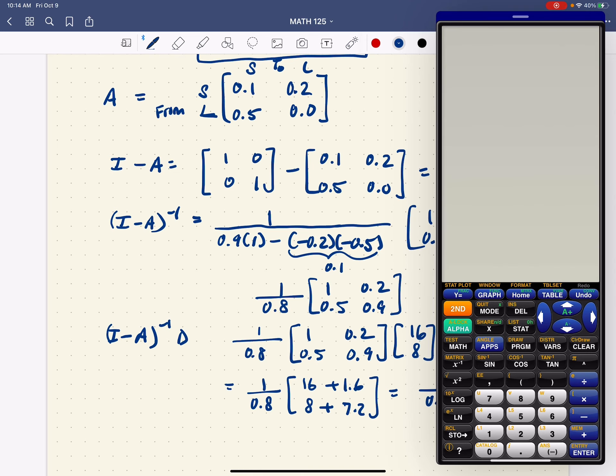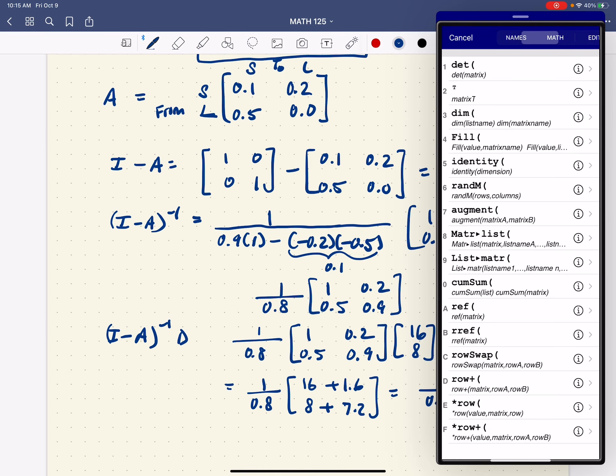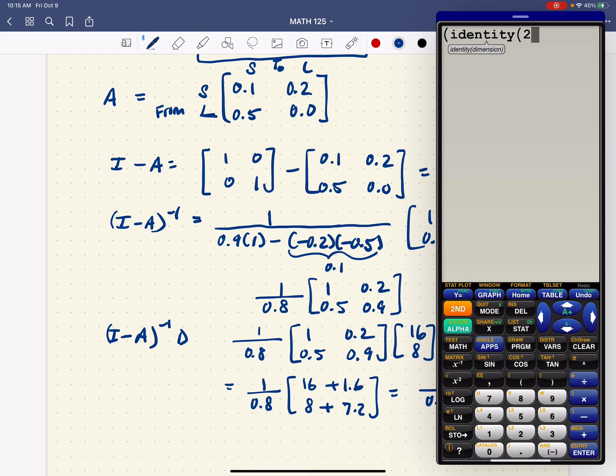And now we're just a couple keystrokes away from getting the answer. So second and quit. I'm going to use a parenthesis because I'm taking the inverse of a complicated expression. I'm going to go to the matrix menu and math. And notice that number 5 here is identity. And I want the two-dimensional identity. So I'm going to put 2 in parentheses there. And then I'm going to subtract matrix A. And then I'm going to take the inverse after I close off the parentheses. And then while I'm at it, I'm going to multiply it by D. And what are we hoping for? 22, 19. Boom. There it is.